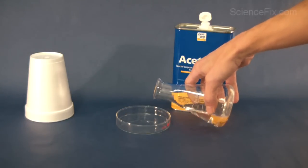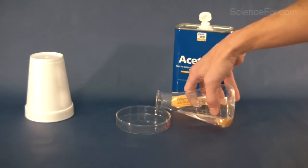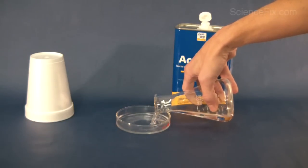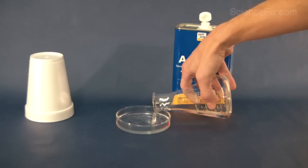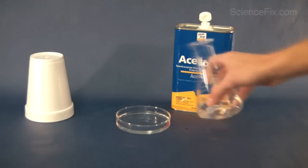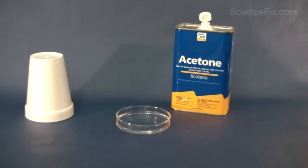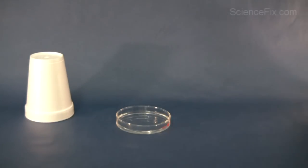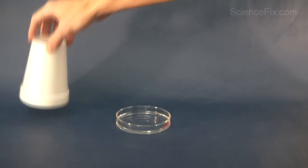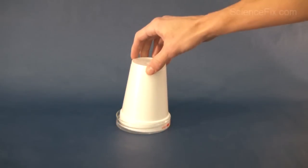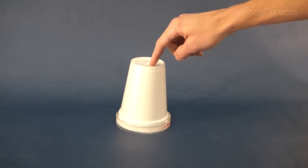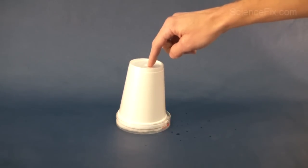In the flask is some acetone and we're going to pour some acetone into the petri dish. To the left is a styrofoam cup. What we're going to do is invert it and place it into the acetone and see what happens in real time.